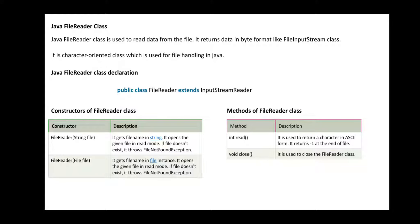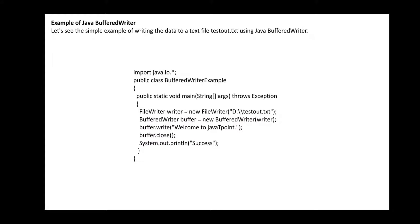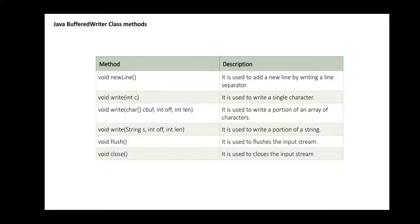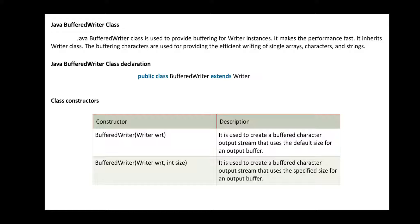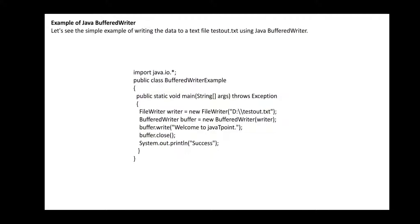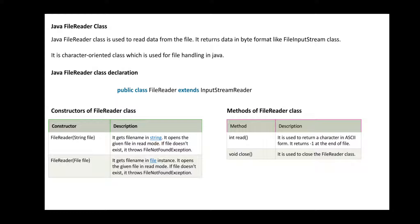In the previous class, you learned about BufferedWriter with its simple methods, and then BufferedReader class — BufferedReader means reading a line of information or characters. Today we will go with the next part, which is FileReader class and FileWriter class: what is actually meant by FileReader class, which type of information it reads, its different constructors, and what methods you can use for the FileReader.